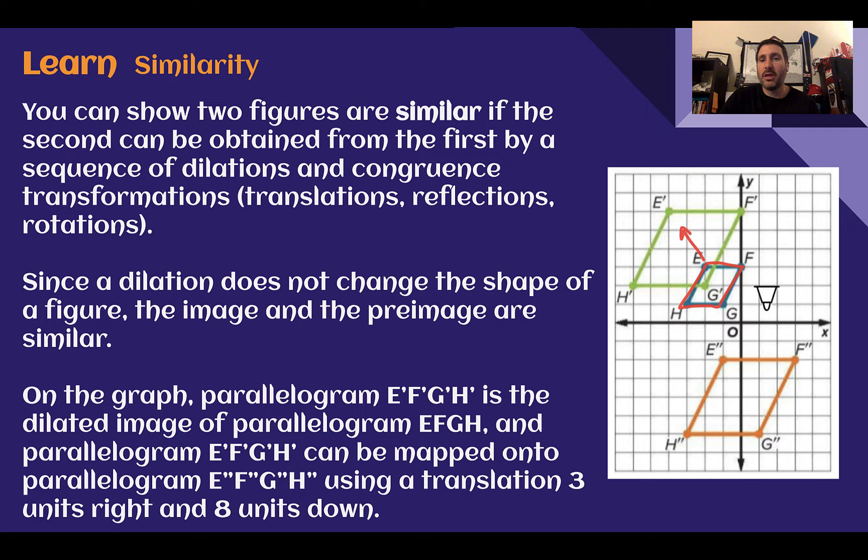If we look at our parallelogram here, a dilation will just change the size, not the shape, which is what makes it similar. Going from EFGH to E'F'G'H', it got larger. It looks like if this was three units away, now it's six units away, that maybe we were multiplying by two. Everything is two times as far. We multiplied everything by that scale factor, we just dilated. It is similar. Then if we look at our final image, our double-primed image, it's the same size now, just translated down eight units and three units to the right.